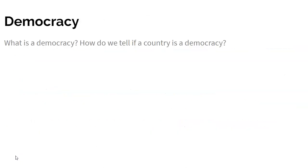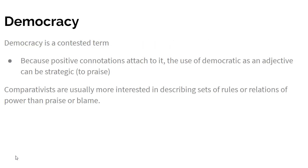Let's get to democracy. What's a democracy and how can we tell if a country is a democracy? First of all, it's a contested term, in part because positive connotations attach to it. There's a tendency to use the word democratic to mean anything that we like, as a term of praise. But we have to be clear — democracies may have attributes that we like and attributes that we don't like. The regime types may be good or bad and democratic or not, and those two things may not always go together.